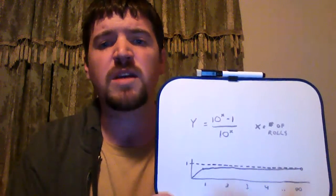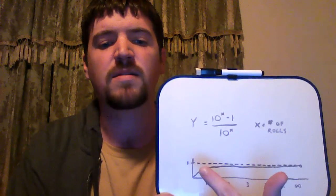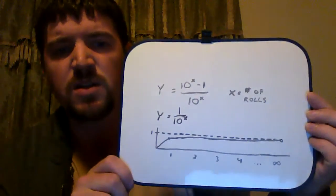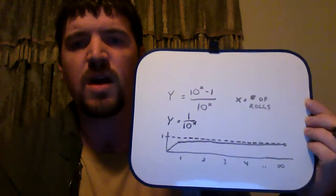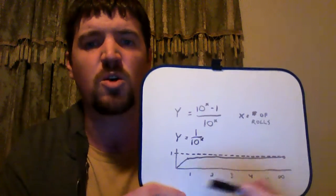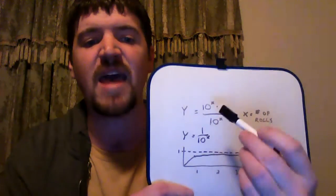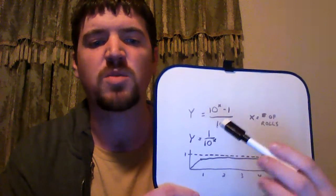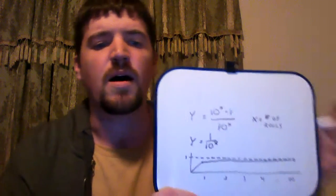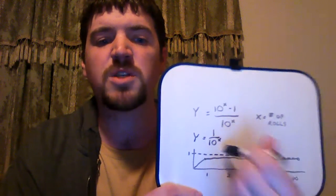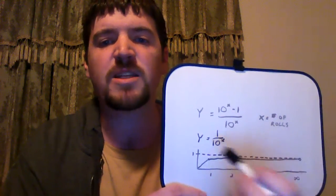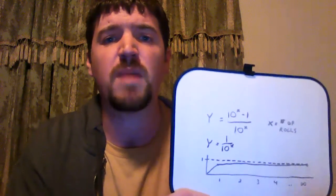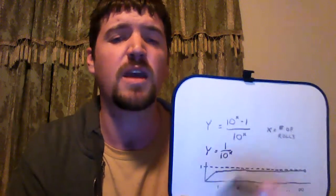There's another way to look at this: what's the difference between 1 and the graphed y? That difference is 1/10^x. For one roll: 1/10 = 0.1; for two rolls: 1/100 = 0.01; and so on infinitely. If you add that to our formula, you get 1 — because (10^x - 1 + 1) / 10^x = 10^x / 10^x = 1. And how do we know 1/10^x never equals 0? If y = 0, then 1/10^x = 0 means 0 × 10^x = 1, which is impossible. So it can never be zero.